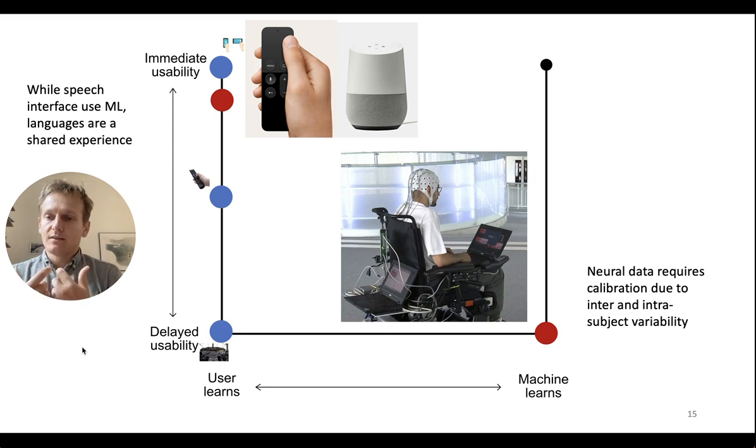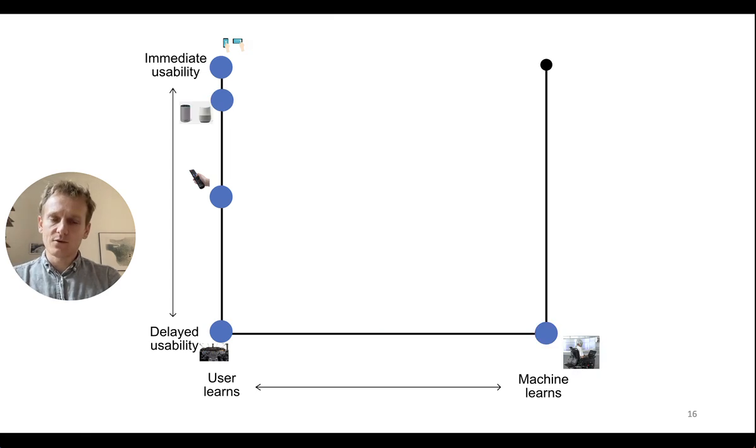Any interface that has a pre-trained machine learning model that has been trained on millions of data of everyone and uses something we have as a shared experience like language like English - if you take an Alexa and you speak in English, everybody can use it right away, there is no need for the machine to relearn how you specifically speak. If anything you have to learn what are the important keywords. That would be more on the left side.